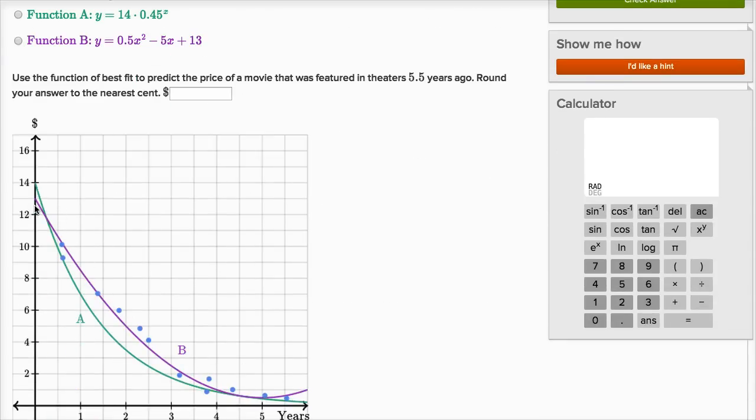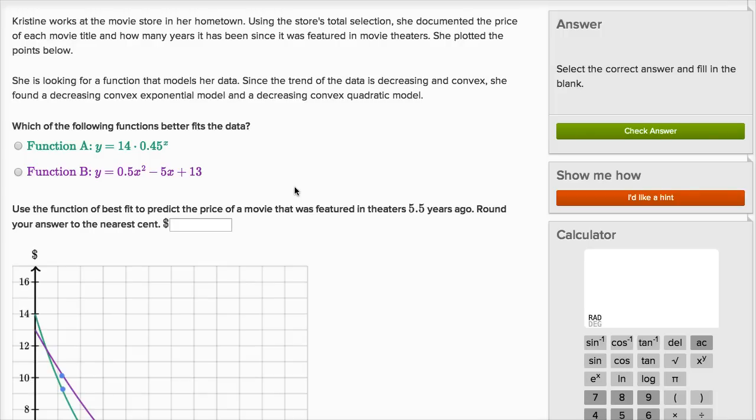It's opening upwards. If you imagine a curve, it looks like it's opening upwards a little bit like that. So decreasing and convex. She found a decreasing convex exponential model and a decreasing convex quadratic model.